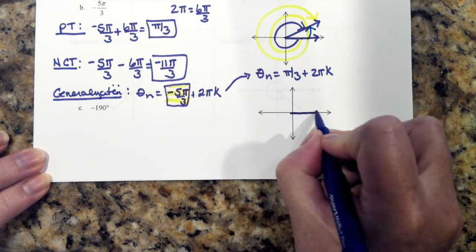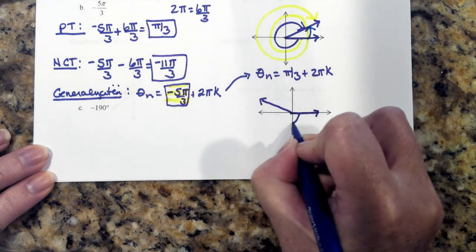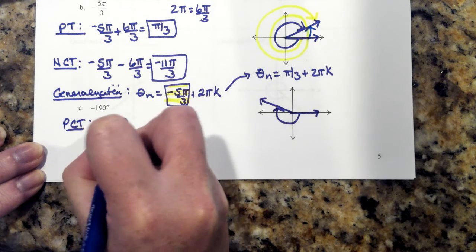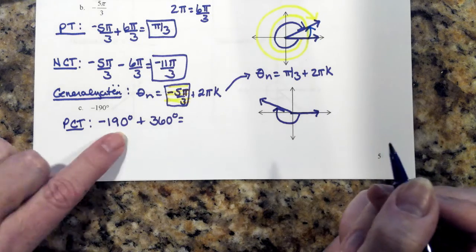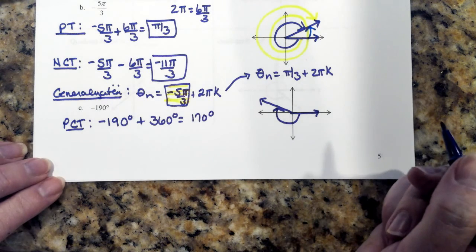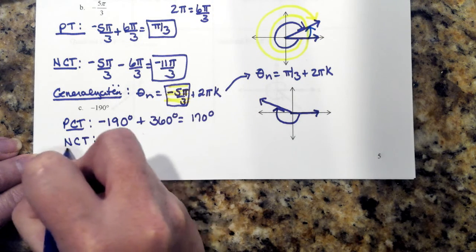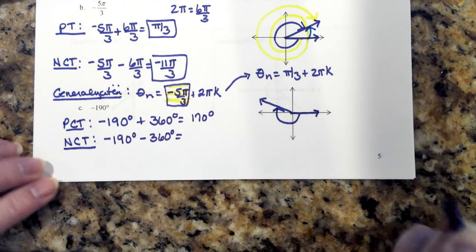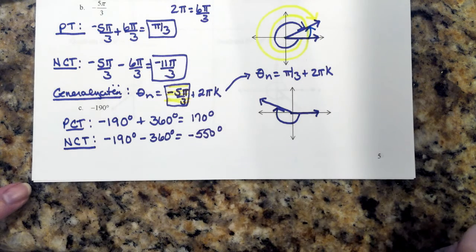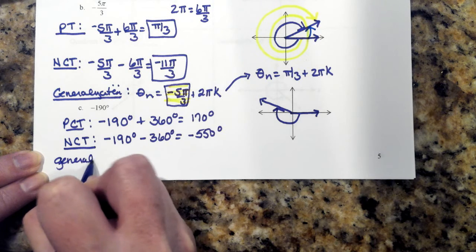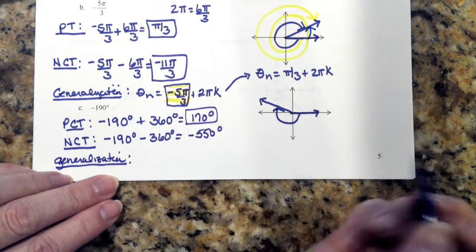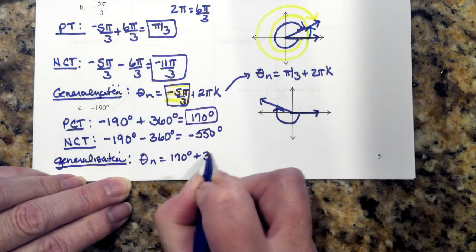For negative 190 degrees, the terminal side is up here in quadrant 2. My positive coterminal angle is negative 190 degrees plus 360 degrees, which gives me 170 degrees. My negative coterminal angle is negative 190 degrees minus 360 degrees, giving me negative 550 degrees. For my generalization, we want the angle between 0 and 360, so we use the positive coterminal angle: 170 degrees plus 360 degrees times k.